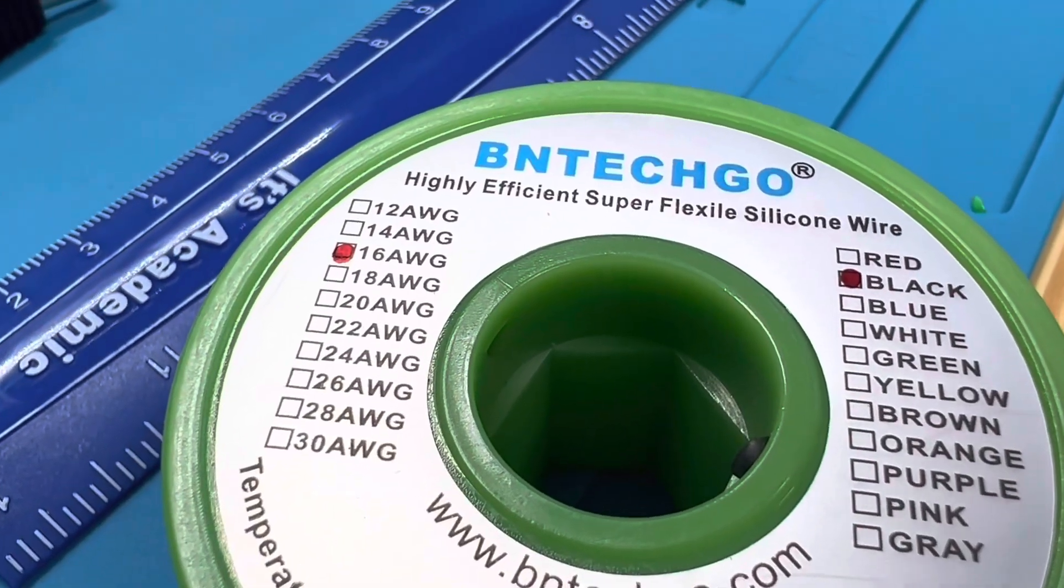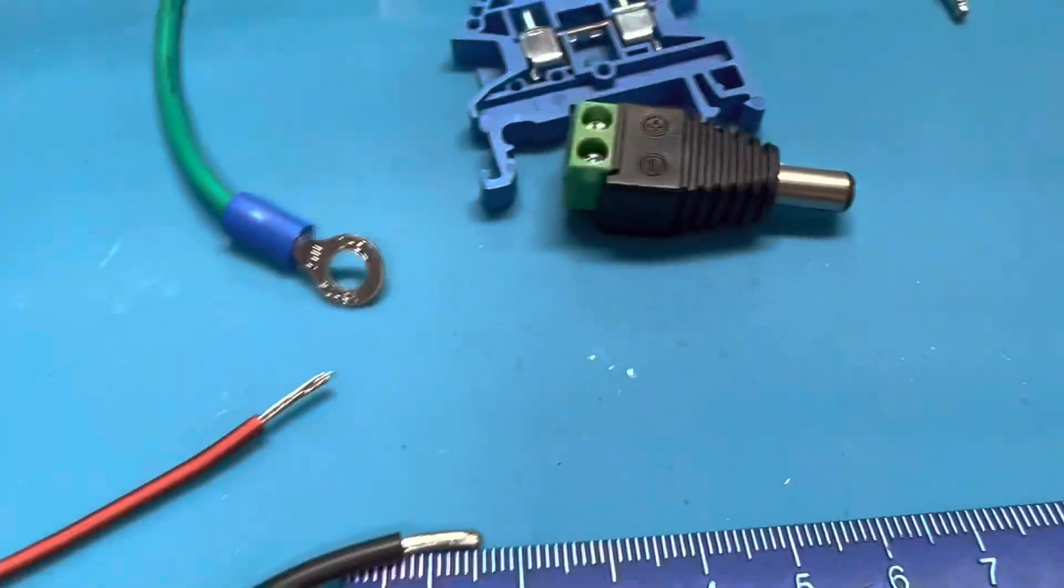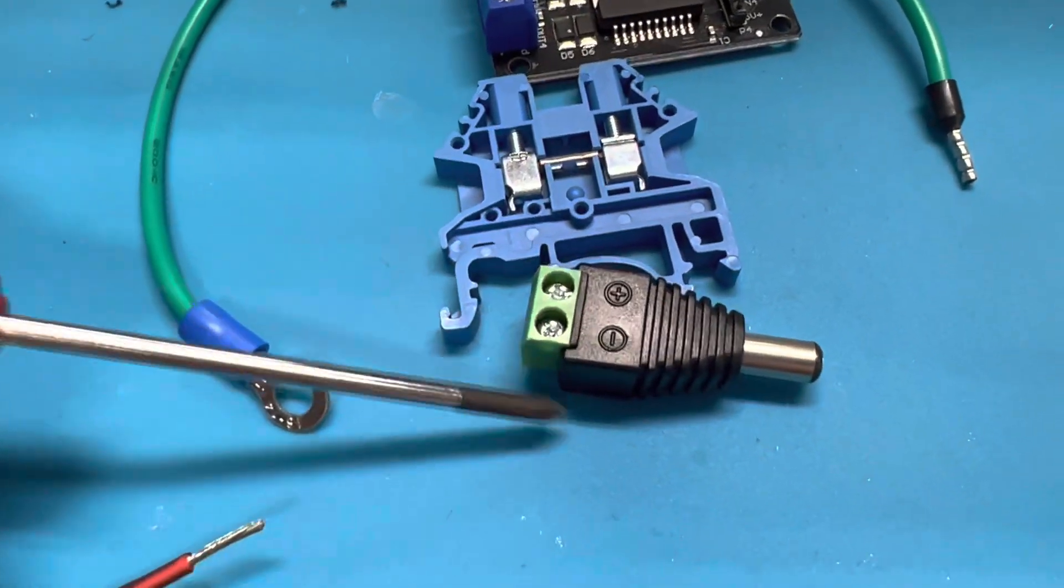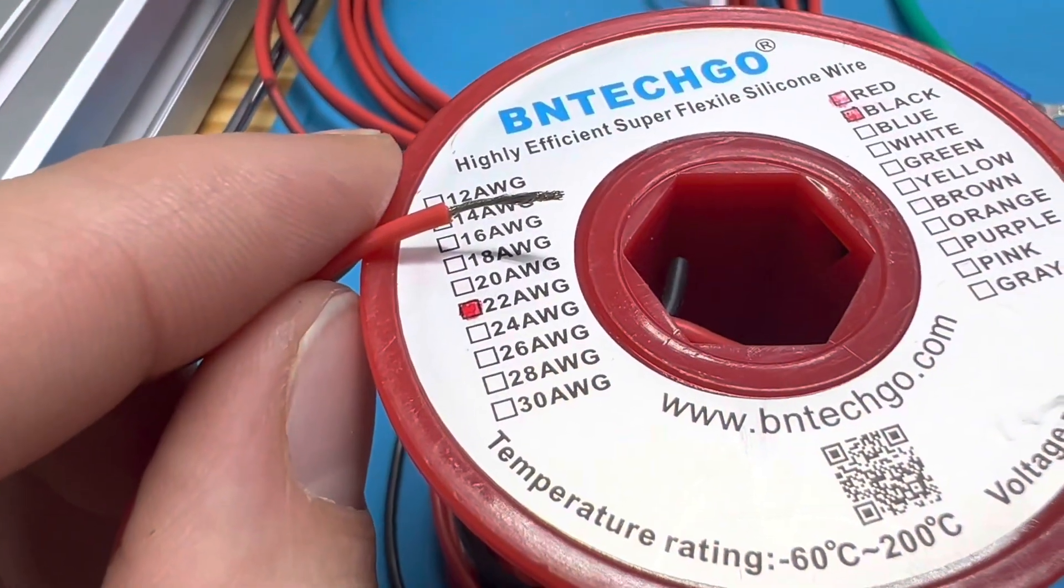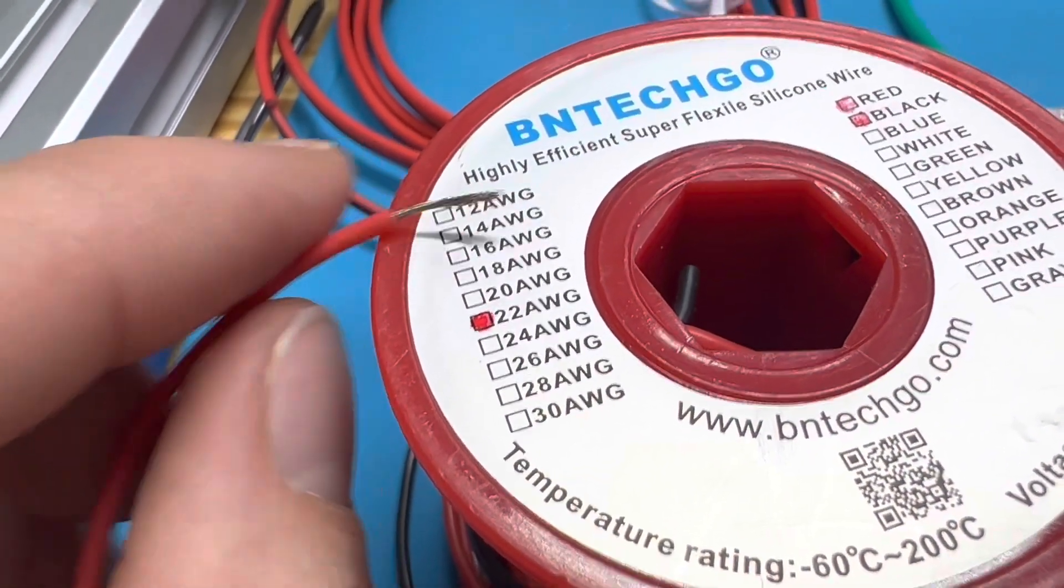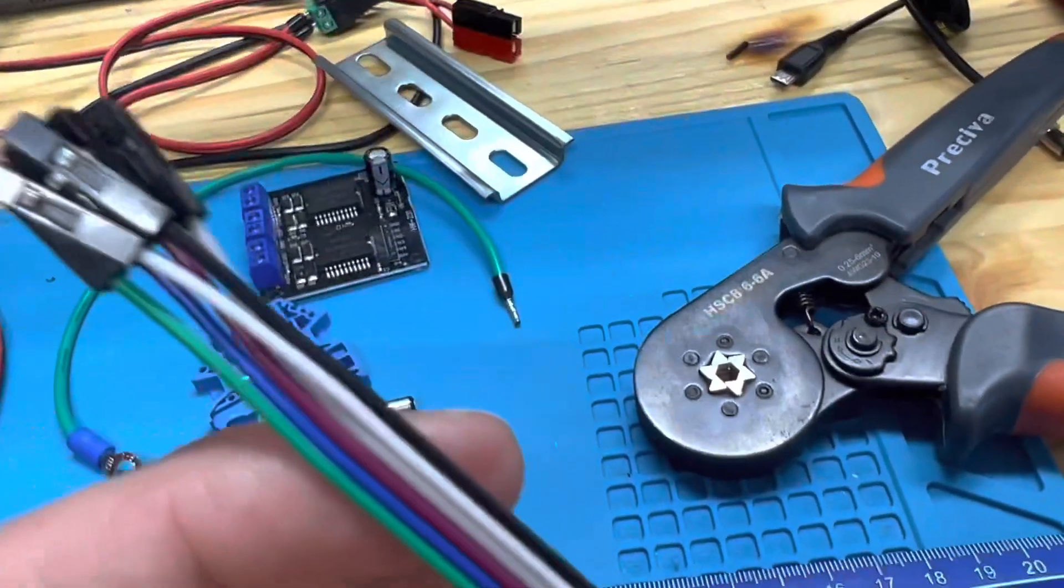You can use a beefy 16 gauge wire like this one if you want to have your terminal rejected by most of the common off-the-shelf screw terminals. You can use this wimpy 22 gauge wire if you want to carry very little current and for an application where you might as well use signal wires.